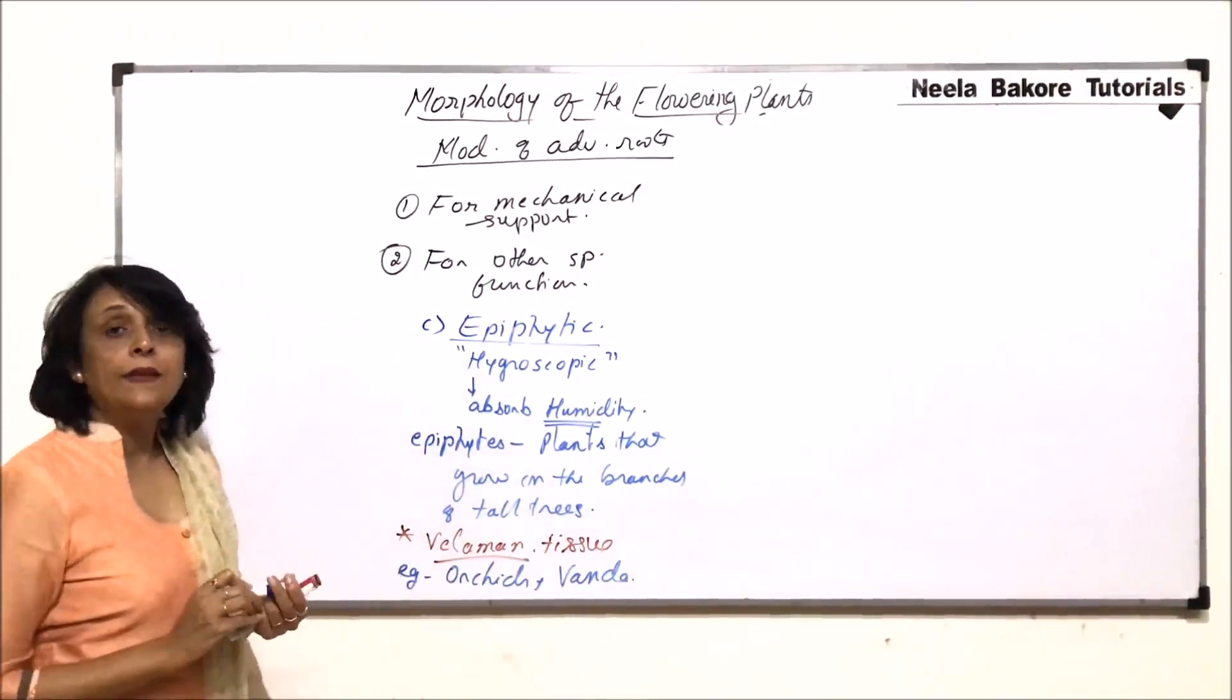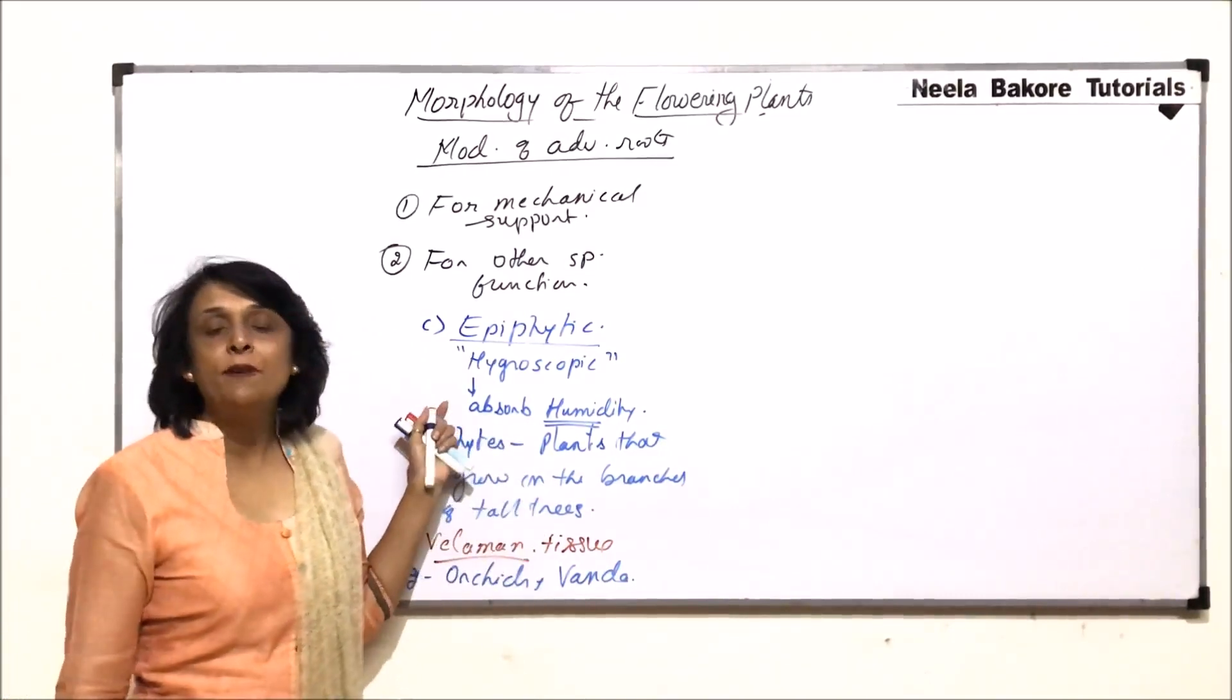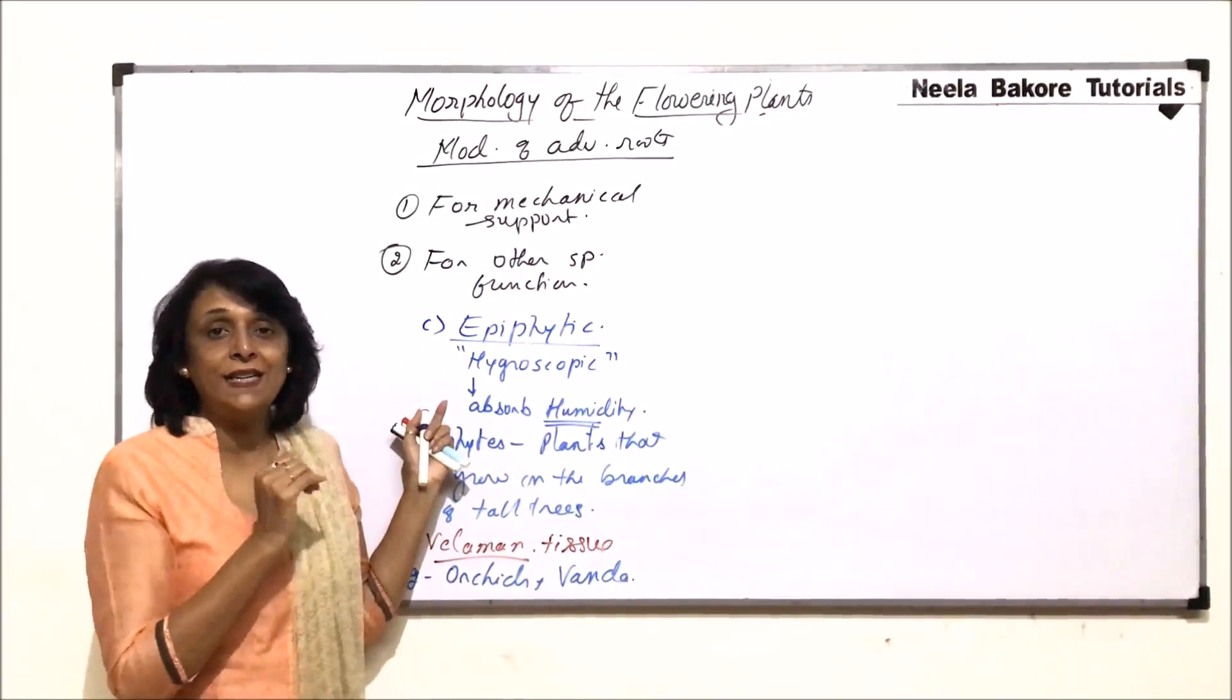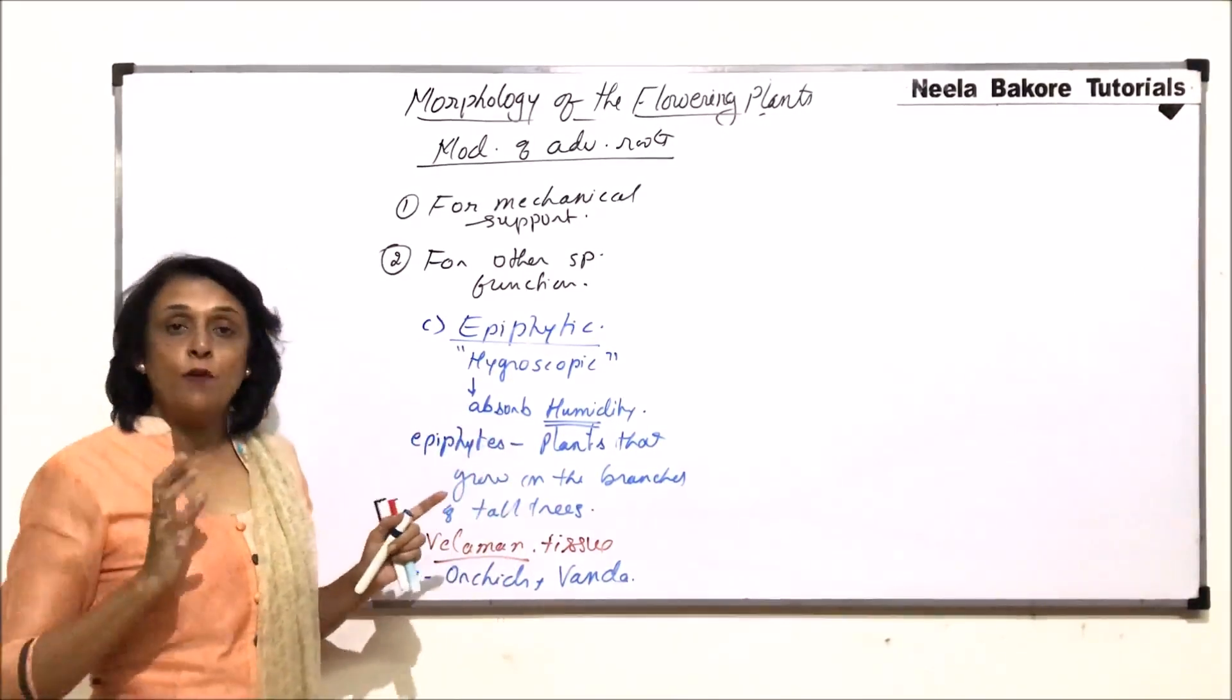So, here the epiphytic roots are present and we now know what epiphytes are. They are growing on the tall trees. They are not parasites. They are autotrophs. They perform their own photosynthesis.